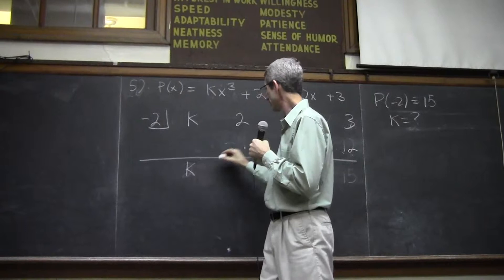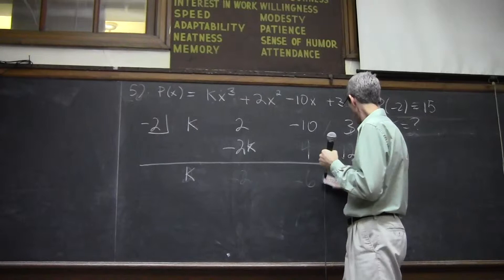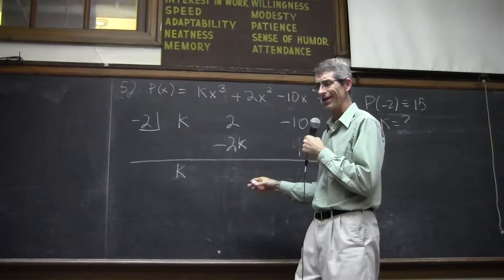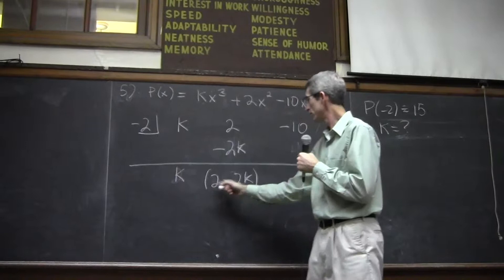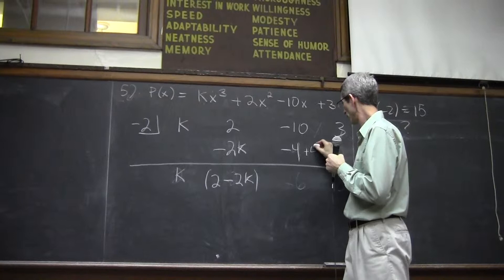Now, you can't combine 2 and negative 2k. They're different terms. They're not like. So you just have to write them. 2 minus 2k. And then when you multiply this, there's implied parentheses. Remember that. So you're going to have to distribute. Negative 2 times 2 is negative 4. Negative 2 times negative 2k is 4k.